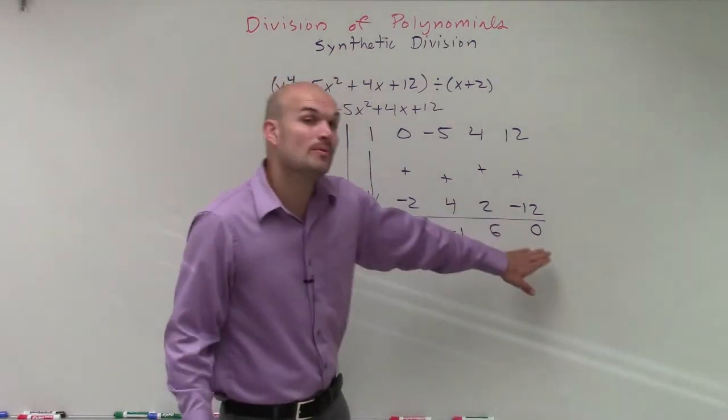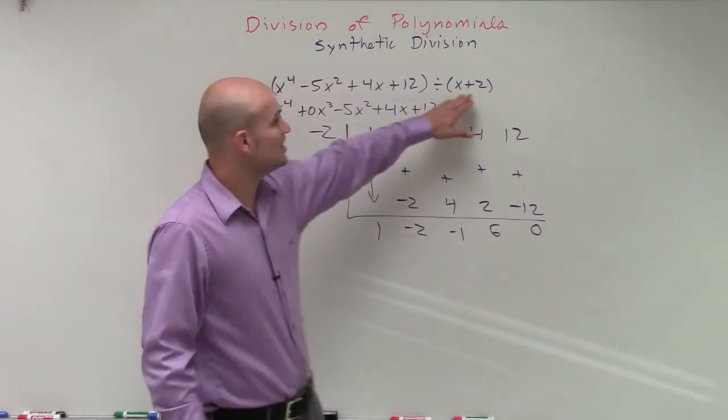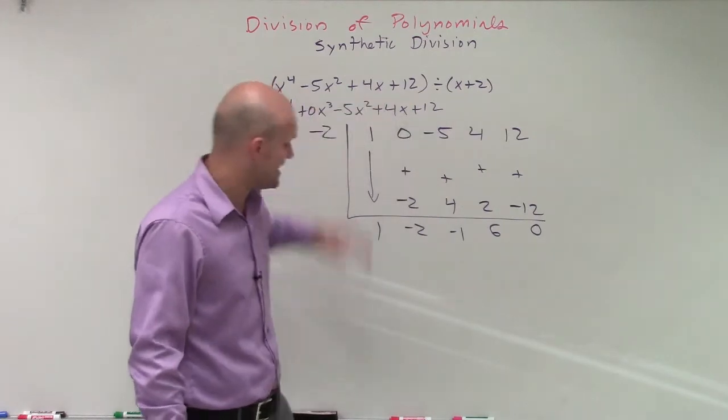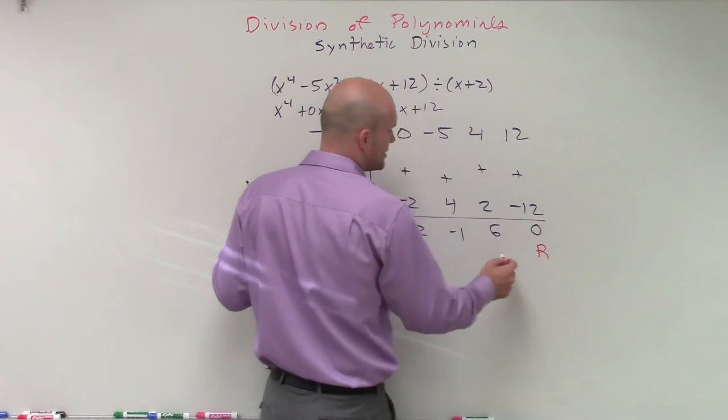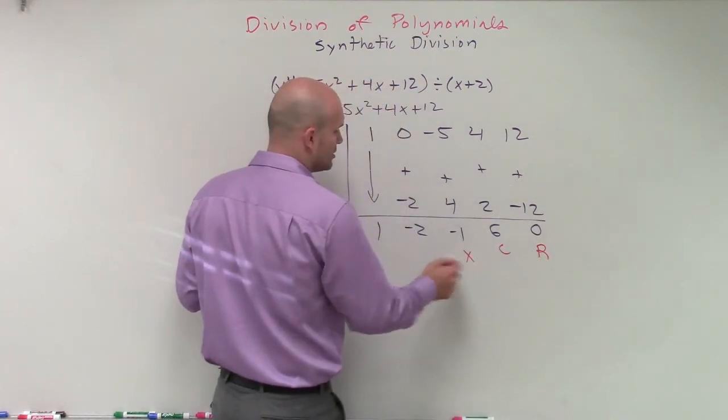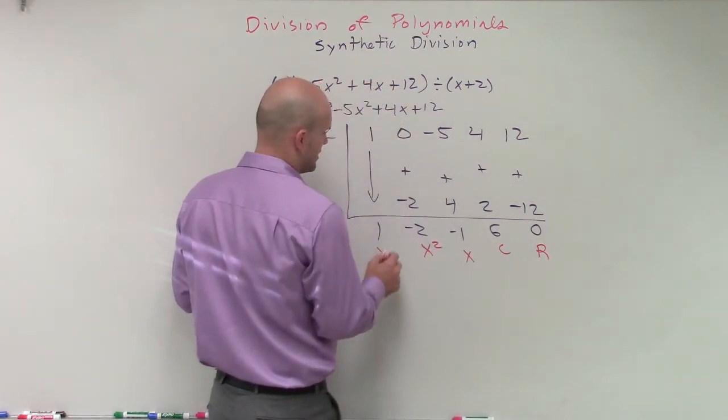So therefore, that's our remainder. We have a remainder of 0, so that tells us that our divisor evenly divides into our polynomial. So therefore, this is our constant, our linear, our quadratic, and our cubic.